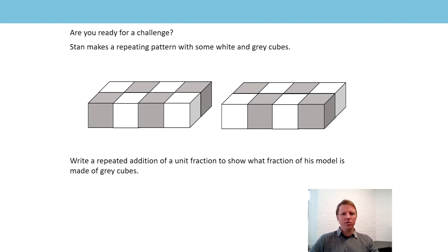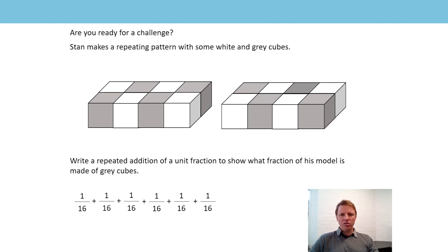Now we know there are 16 cubes, we can think about what our repeated addition will look like. Starting with one gray cube: the denominator is 16, so that one gray cube is one sixteenth. Then each additional gray cube adds another sixteenth, and so on for all gray cubes. So one sixteenth plus one sixteenth plus one sixteenth, continuing until we've included all gray cubes — we've added eight one-sixteenths. So the final answer is equal to eight sixteenths.